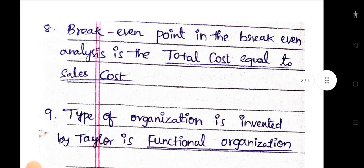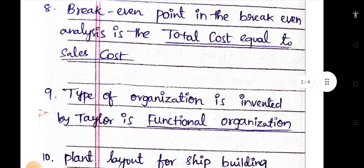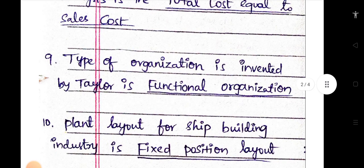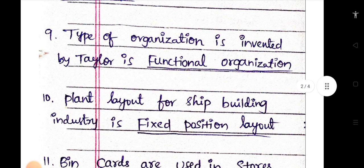Breakeven point in breakeven analysis is where total cost equals sales cost. The type of organization invented by Taylor is functional organization. Plant layout for shipbuilding industry is fixed position layout.